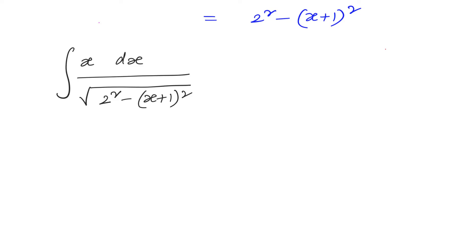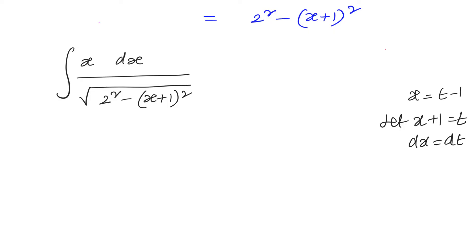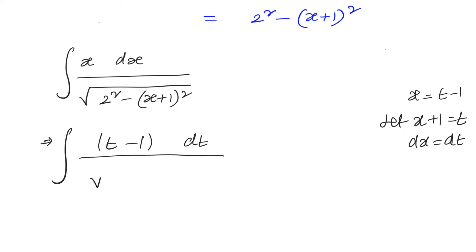So our problem becomes the integral of x dx divided by square root of 2 squared minus (x plus 1) whole squared. Let us take x plus 1 equals to t, so dx equals dt. This becomes the integral of (t minus 1) dt divided by square root of 2 squared minus t squared.